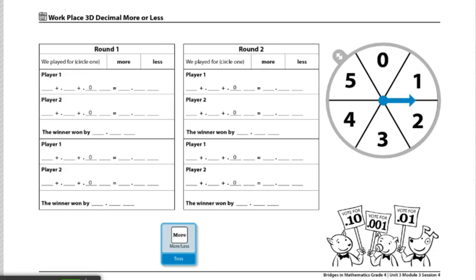Players will roll the more or less die to determine whether they will play more or less in the first round. They will circle the word on the record sheet to show which one was rolled.